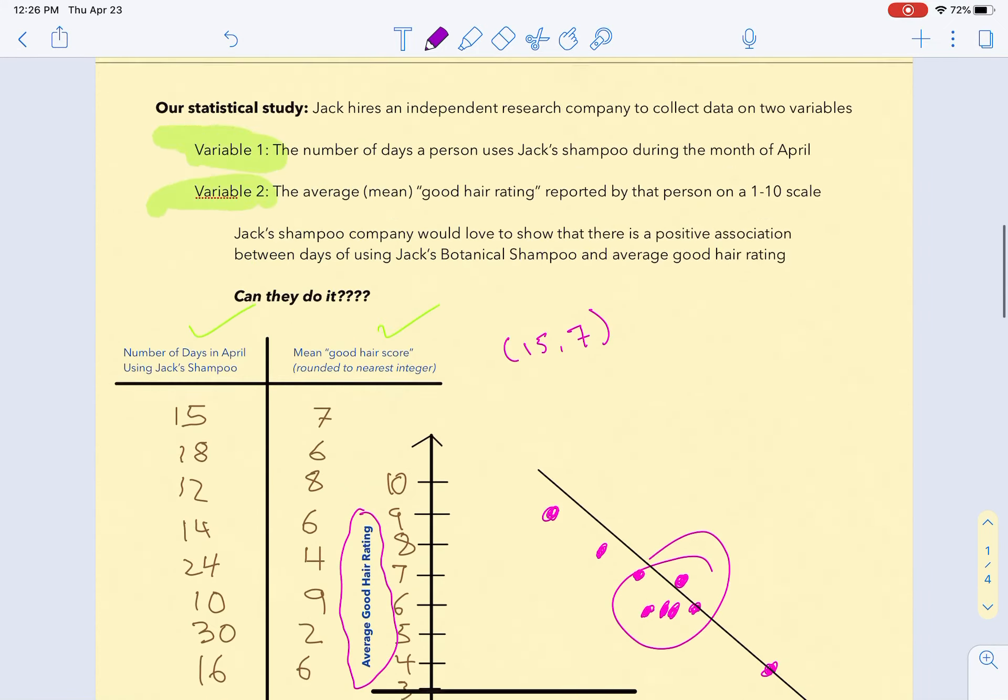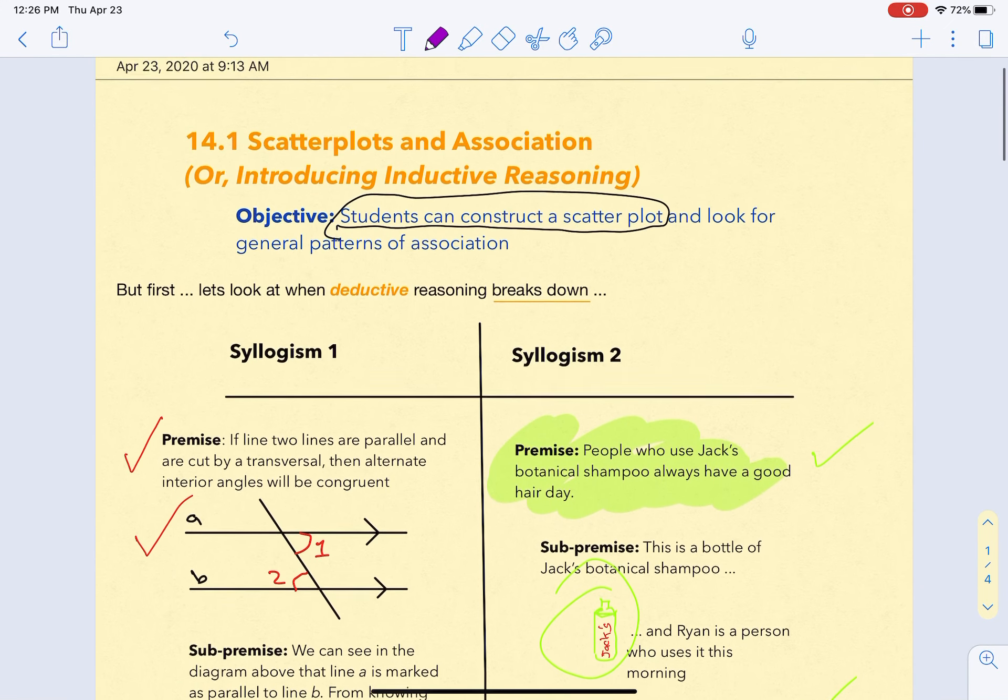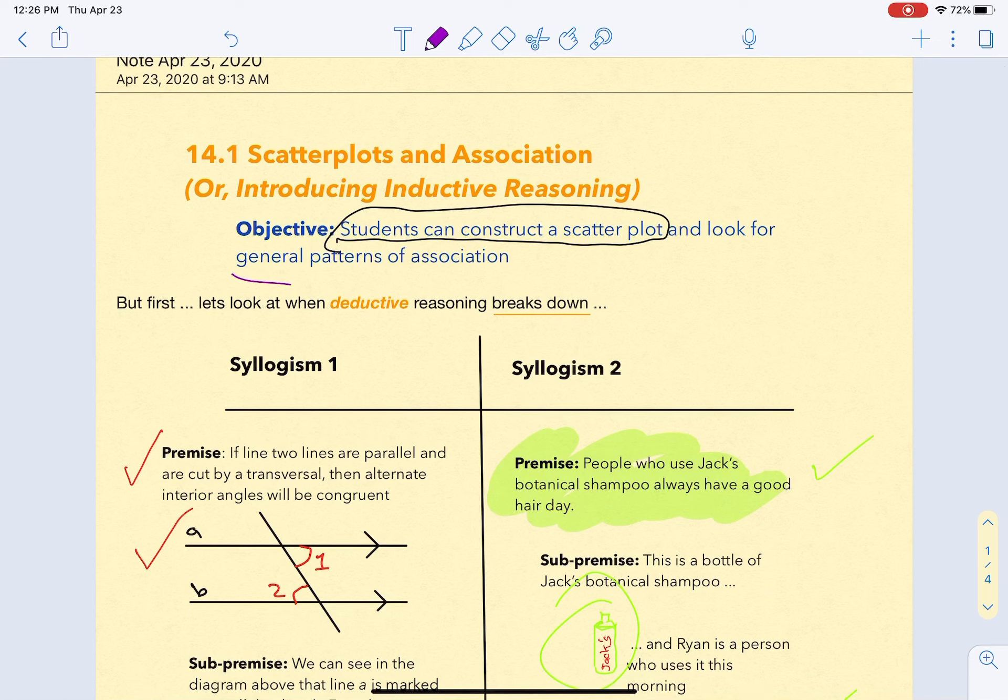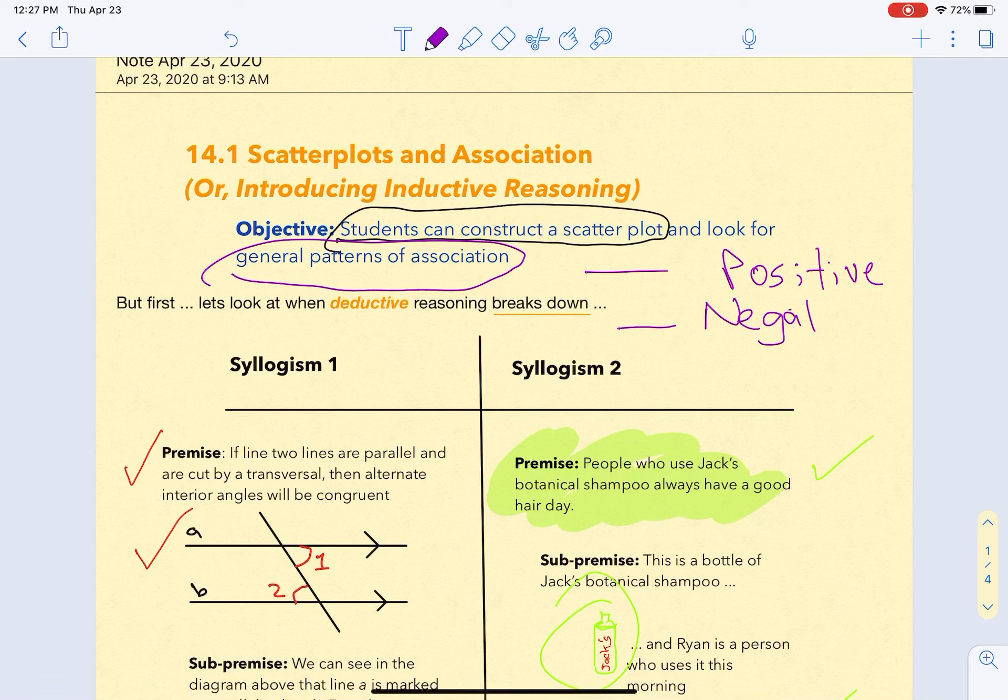That's the second piece to our lesson for 14.1 - looking for those patterns of association. There are three patterns. Positive: as x goes up, y goes up. Negative: as x goes up, y goes down. And no association: as x goes up, y does random stuff, essentially.